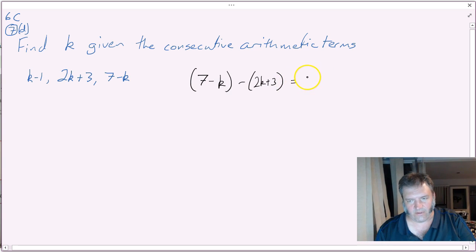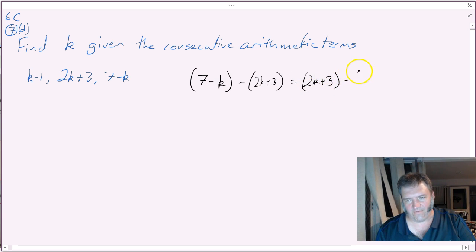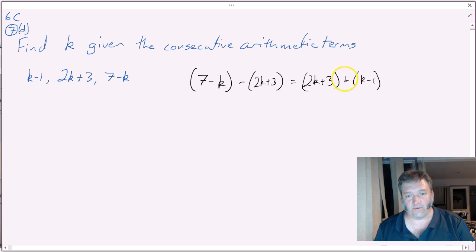that must equal the second term, 2k plus 3, minus that first term, k minus 1. The difference has to be constant between terms, so I can do term 3 minus term 2. That would be the same as term 2 minus term 1.